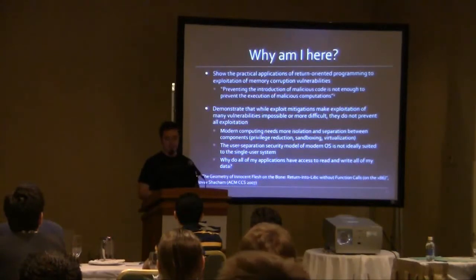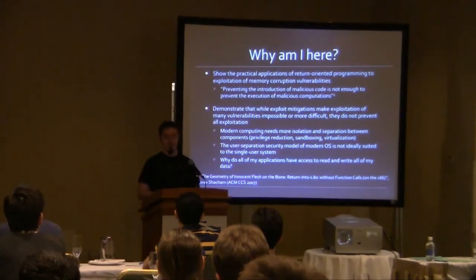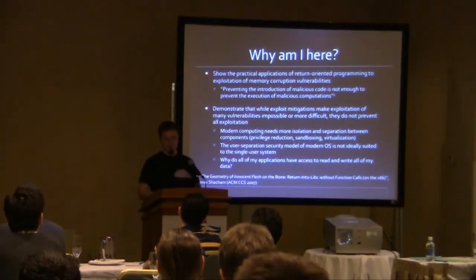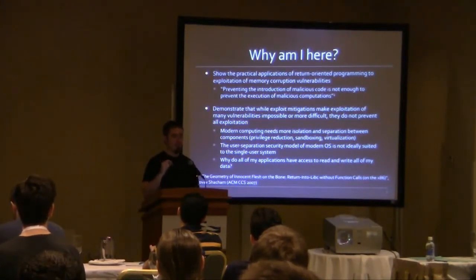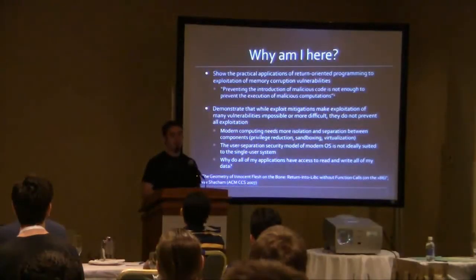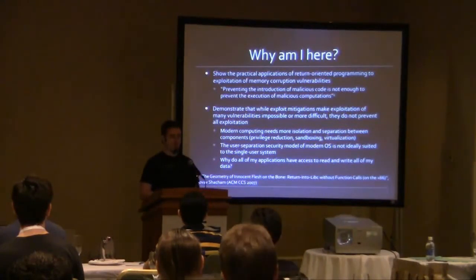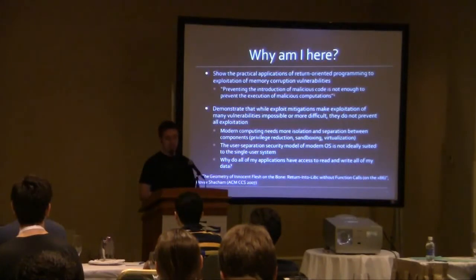The point I'm going to make continually is, for the defense side, preventing the introduction of malicious code is not enough to prevent the execution of malicious computations. I ripped that off completely from the original paper because it's a very great point. Anyone looking at defense systems, whether operating system mitigations or security products, they all too often rely on simple attacker tactics they try to stop, like introducing malicious code — which is only the most flexible way to exploit a memory corruption vulnerability. Exploitation mitigations make exploitation of many types of vulnerabilities more difficult, but they haven't stopped it and do not prevent all exploitation.